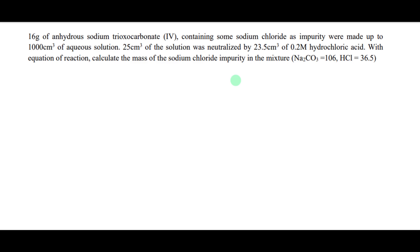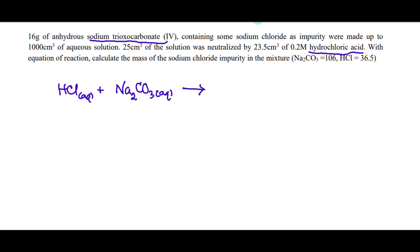This question is a volumetric analysis question on acid-base titration between hydrochloric acid and anhydrous sodium carbonate. We write the equation of reaction: HCl (aq) + Na₂CO₃ (aq) → NaCl (aq) + H₂O + CO₂ (g), since this is a reaction between an acid and a carbonate, the products are salt, water, and carbon dioxide.